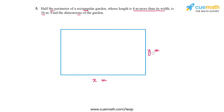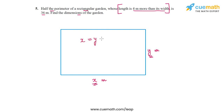The first piece of information is that the length is 4 meters more than the width. This means x is 4 more than y, or x = y + 4. This is our first equation.